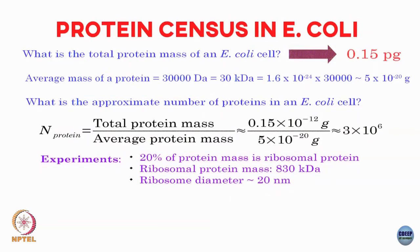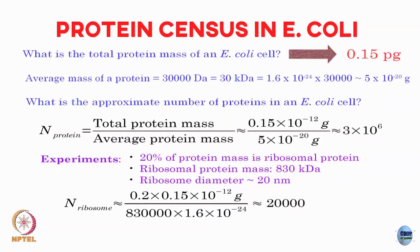We can do more estimates. For ribosomes — which bind on RNA and join amino acids together to form proteins — around 20 percent of protein mass is ribosomal. The ribosomal protein is roughly 830 kilo Daltons and has a diameter of roughly 20 nanometers. You could then estimate that a single E. coli cell would contain around 20,000 ribosomes.